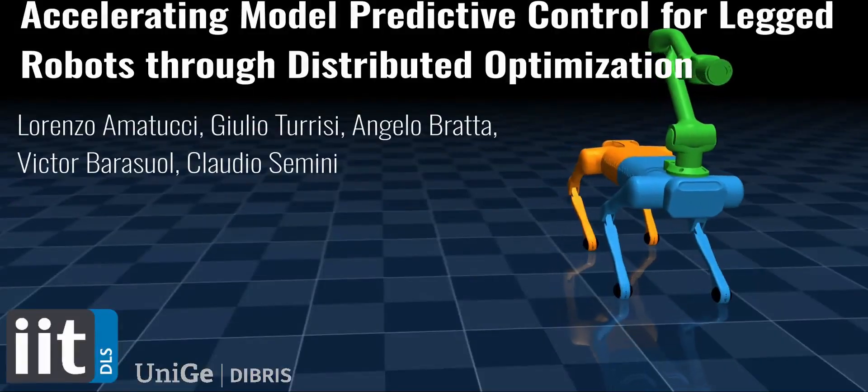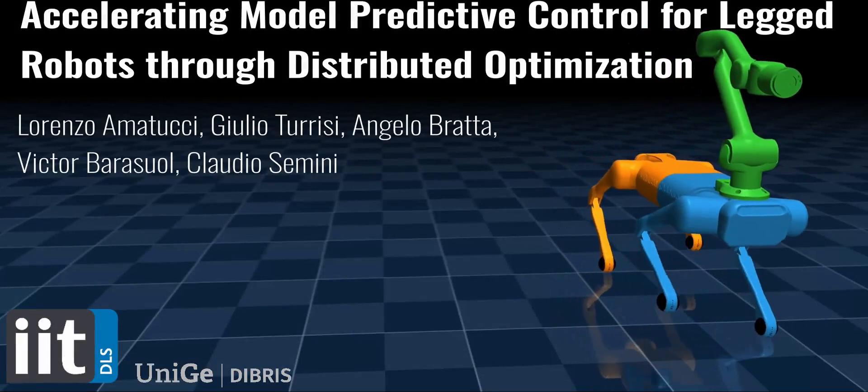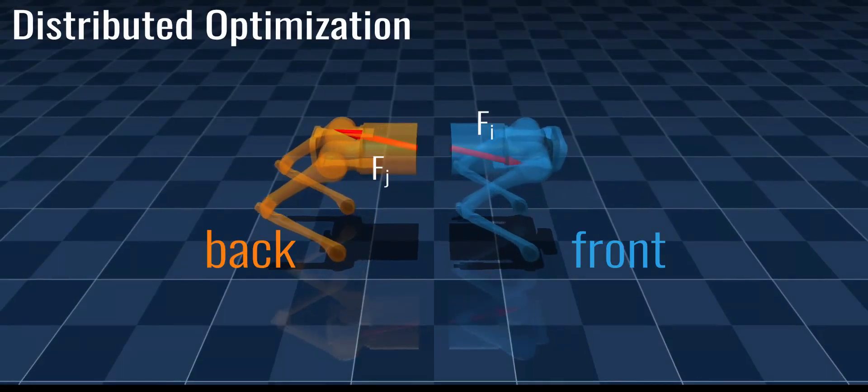We are going to present our work on accelerating model predictive control for legged robots through distributed optimization. The idea is to divide the robot into smaller and more tractable subsystems that can be solved in parallel.